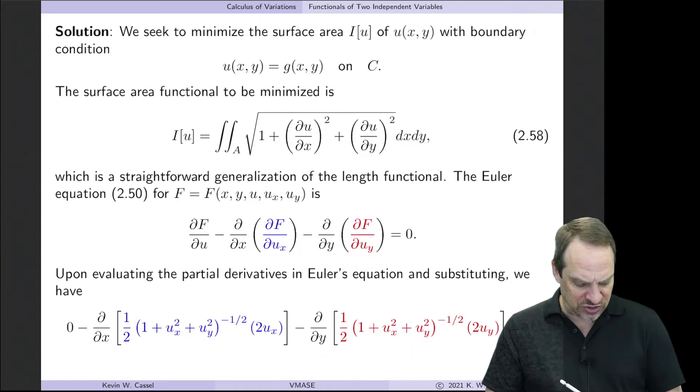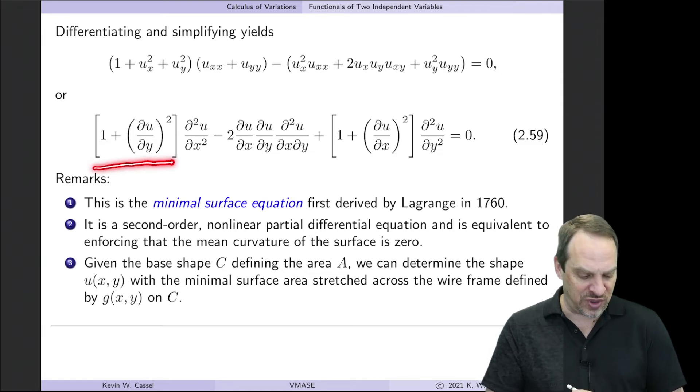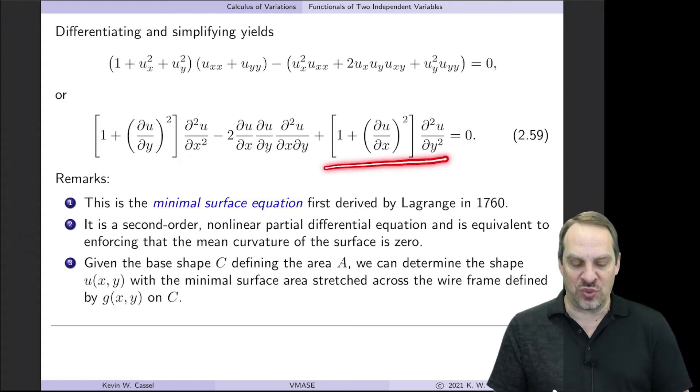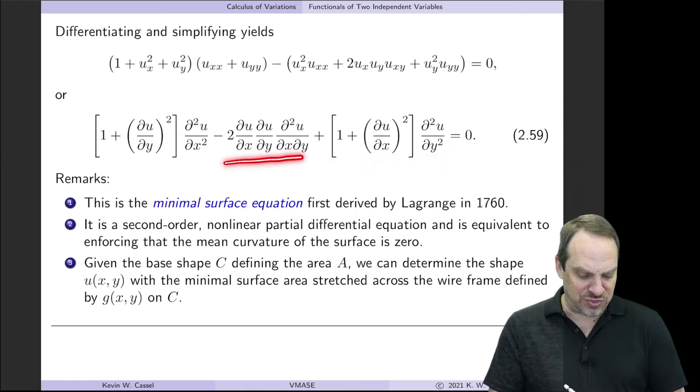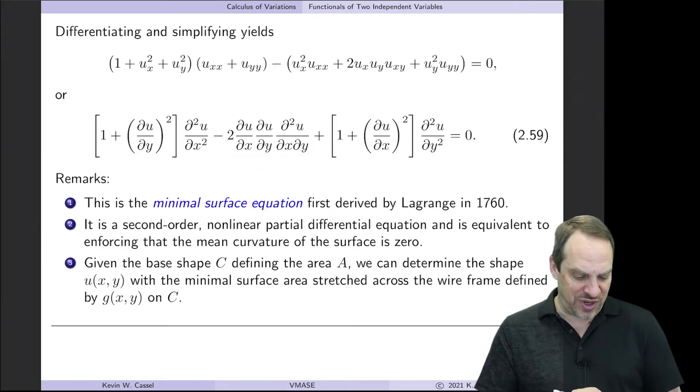So if you take partial partial x of the blue and partial partial y of the red, you have to do some product rules in there. But once you clean that up, you'll get this form right here. It's a rather complicated looking equation, but you get the quantity 1 plus the square of partial u partial y, all times partial squared partial x squared. You get a similar term for partial squared u partial y squared. And then you get this mixed derivative term, minus 2 partial u partial x partial u partial y partial squared u partial x partial y.